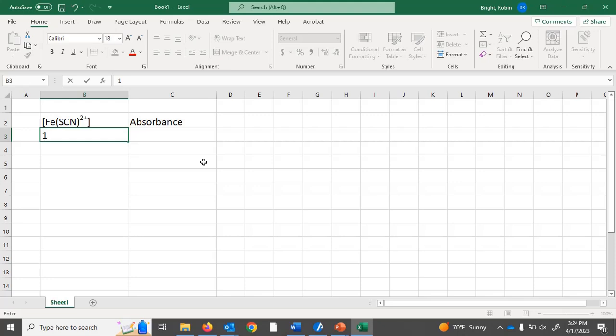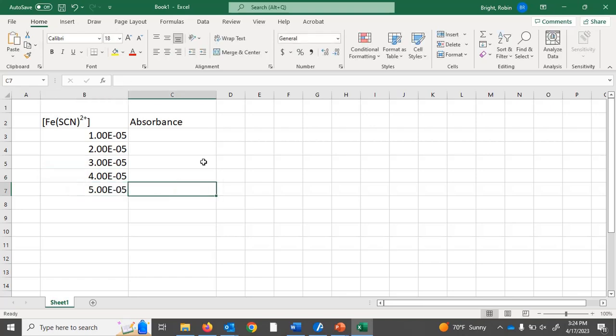So I'm going to make up numbers. If I want to use scientific notation in Excel, I basically do it the same way I do it on iClicker: one capital E minus five, two E minus five, three E minus five, four E minus five, and five E minus five. And like I said, I'm just going to be making up numbers: 0.02, 0.04, 0.058, 0.084, and 0.095.